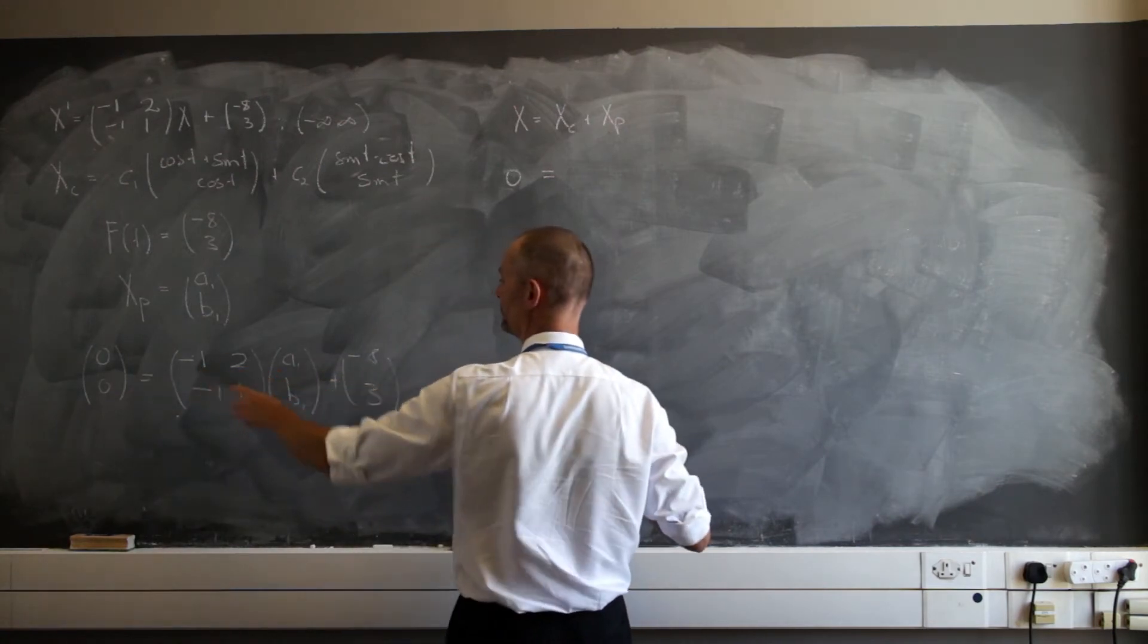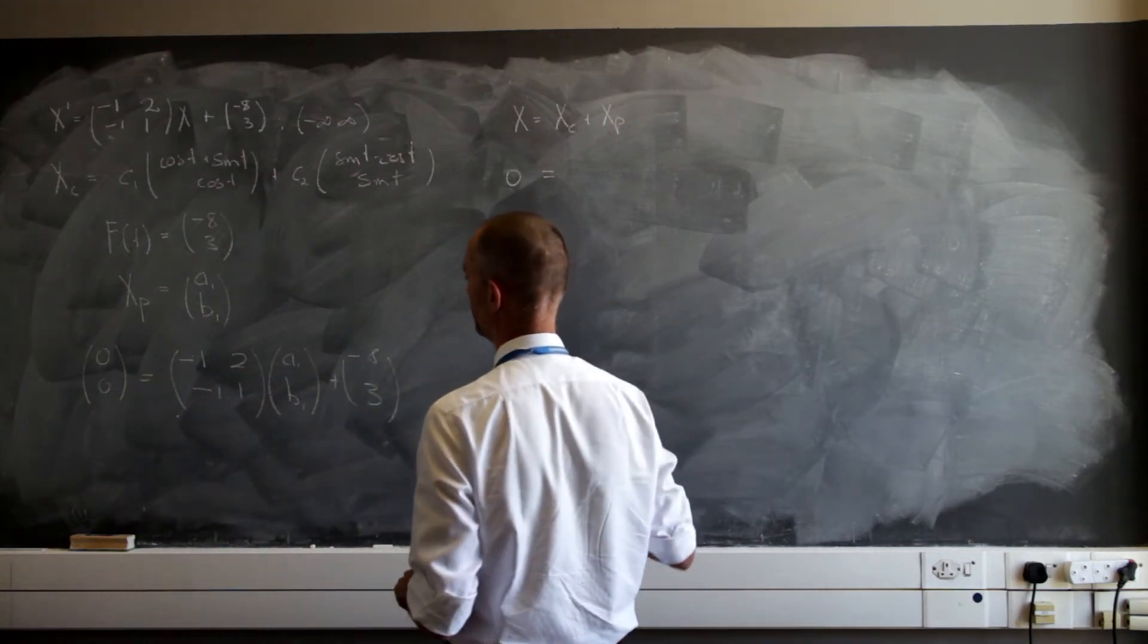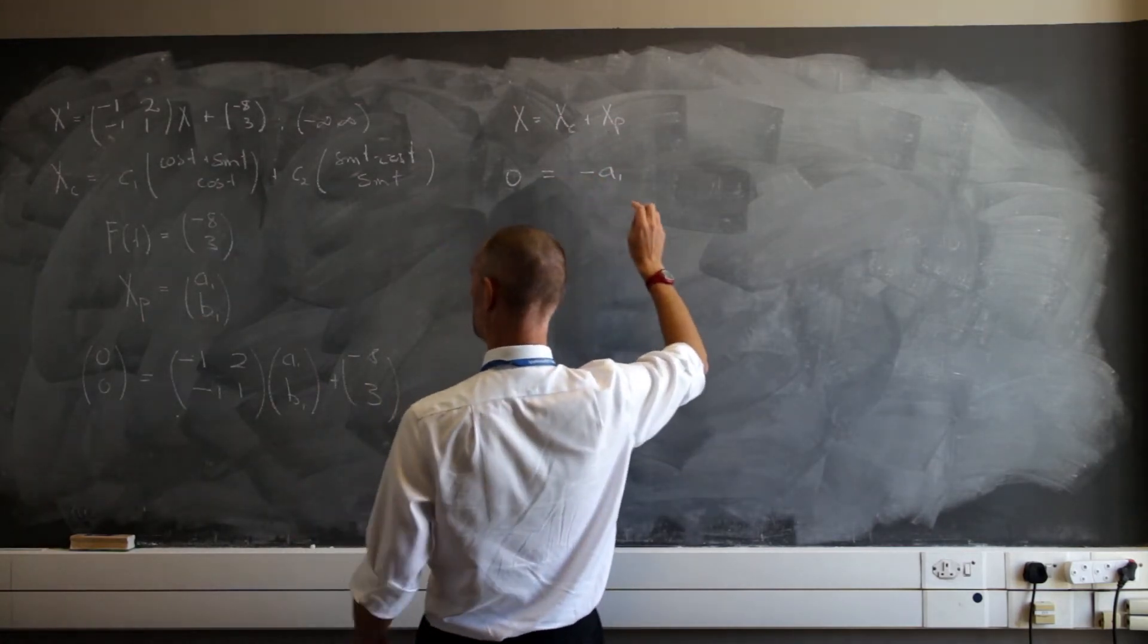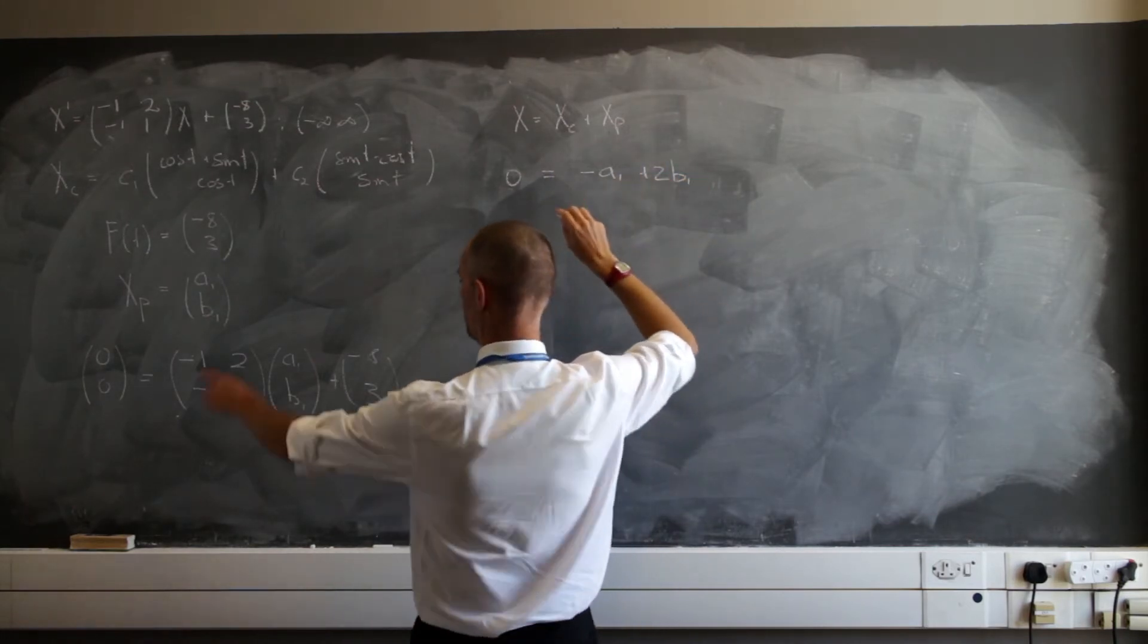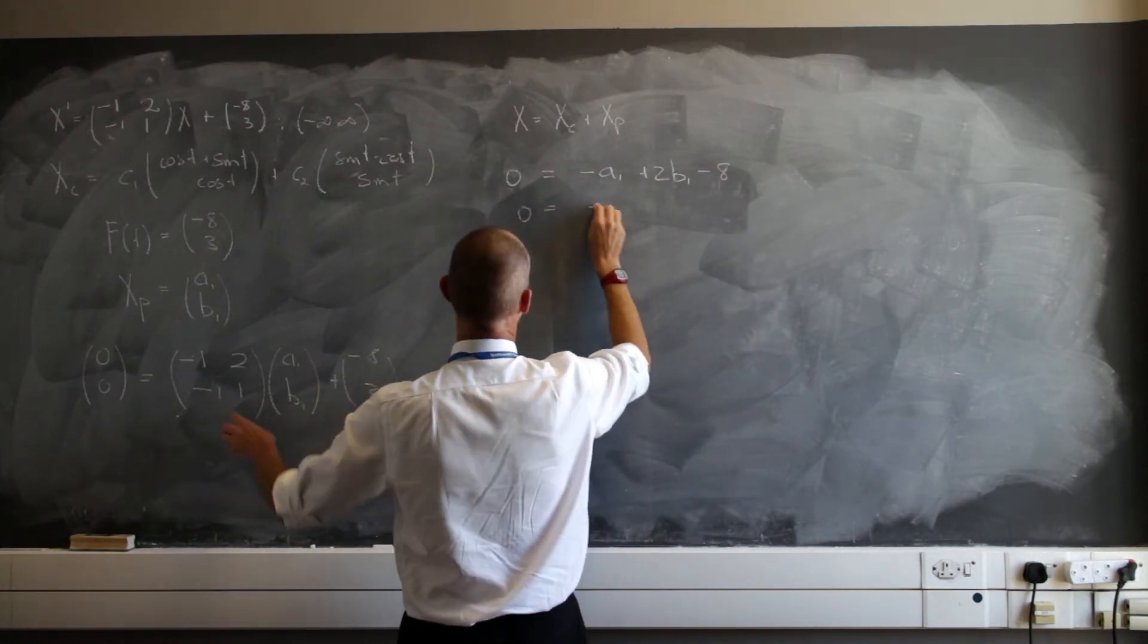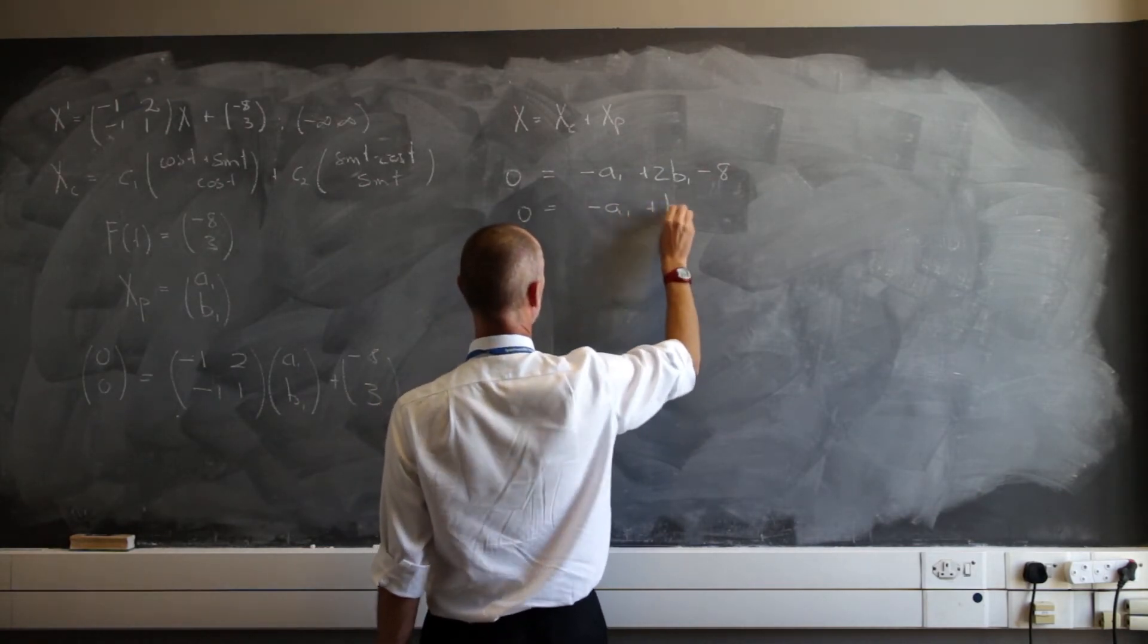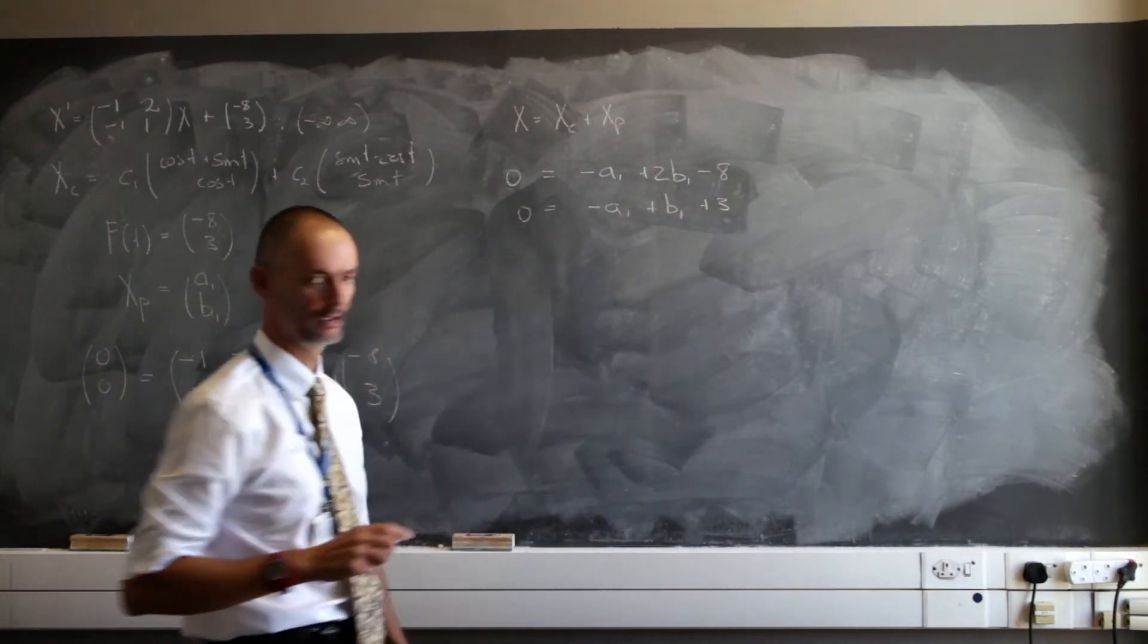So this 2 by 2 matrix times this 2 by 1 matrix is going to give us negative a sub 1 plus 2 times b sub 1, and then negative 8 on that side. And here we're going to have 0 equals negative a sub 1 plus b sub 1, and that is plus 3, and that has got to equal 0.